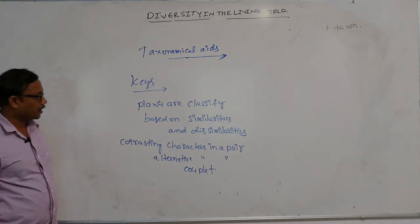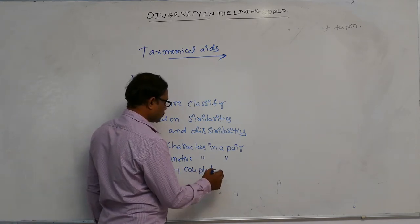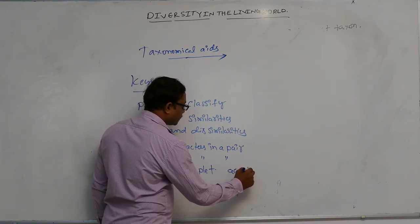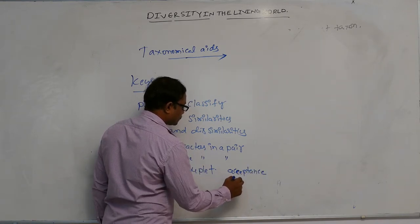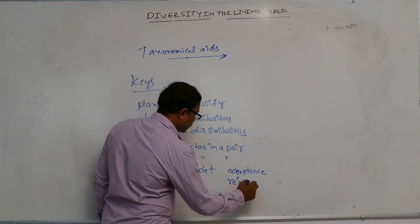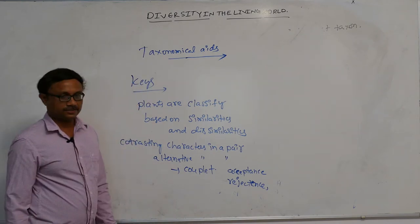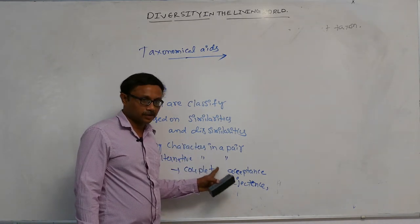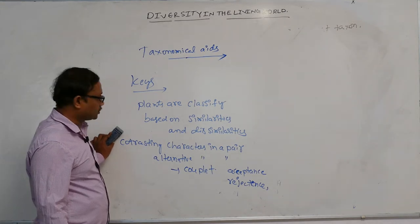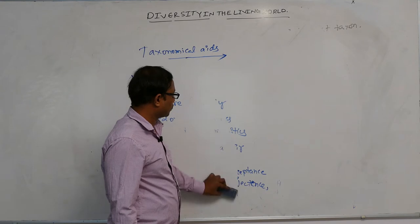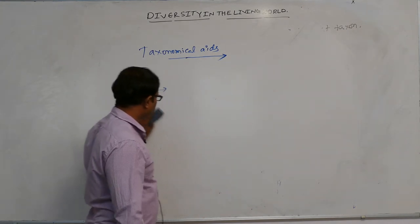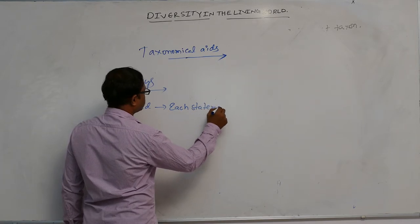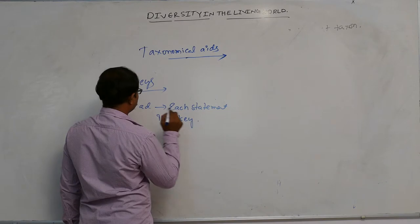Contrasting or alternative characters in a pair are known as a couplet. In a couplet, one character is accepted and the other is rejected — the choice made between the two options. This is similar to true or false, yes or no. Each statement in a key is known as a lead.